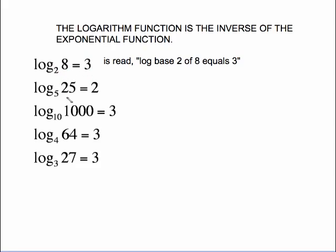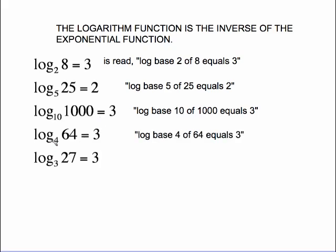So this next one will be read as log base 5 of 25 equals 2. Log base 10 of 1000 equals 3. Log base 4 of 64 equals 3. Don't say log base 4 to the 64. It's not. The 64 is not an exponent. This is a base. Think about it being bottom like basement. Log base 4 of 64 equals 3. And then this one is log base 3 of 27 equals 3.